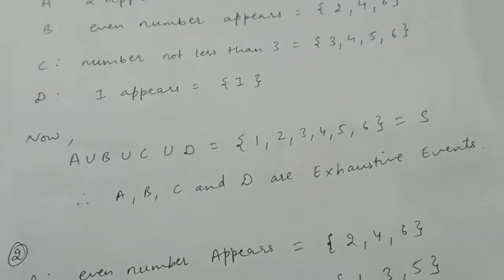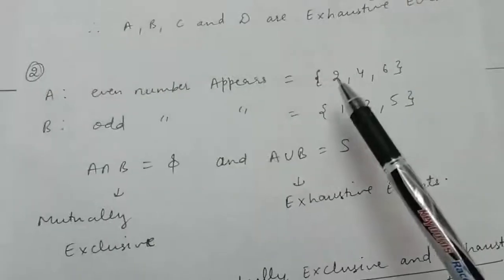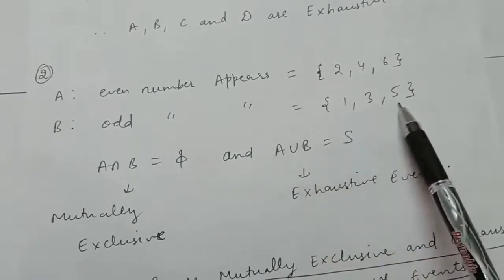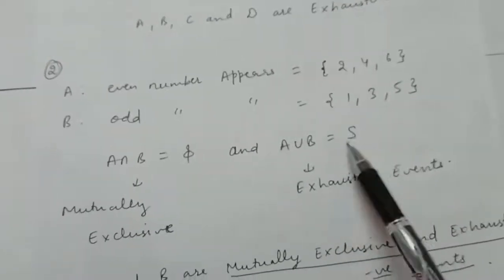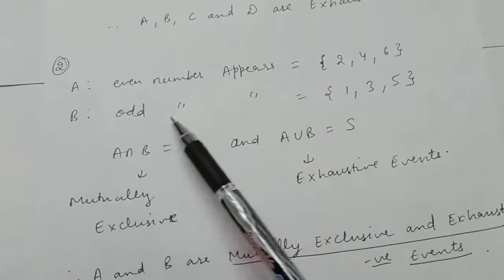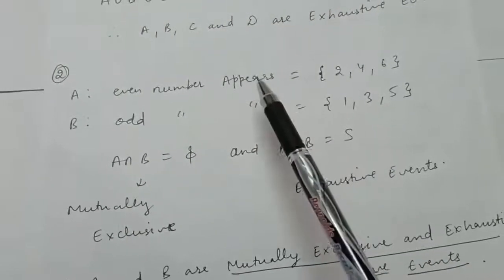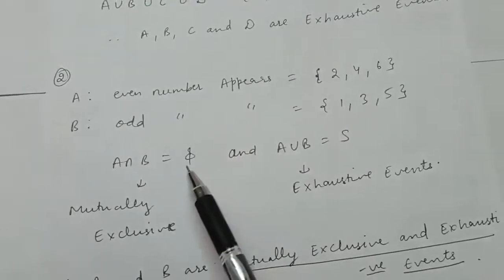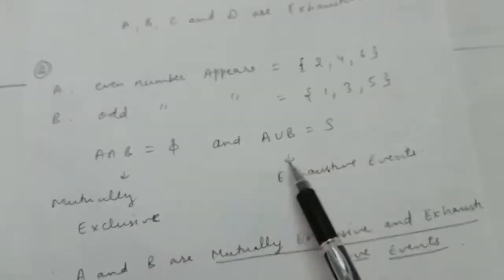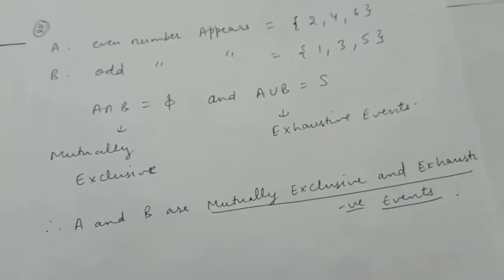Another example: event A is an even number appears, so A = {2, 4, 6}, and event B is an odd number appears, so B = {1, 3, 5}. The union of A and B is {1, 2, 3, 4, 5, 6} — the sample space — so they are exhaustive. Also, the intersection of A and B is phi, so they are mutually exclusive as well.